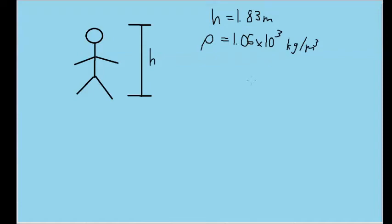This problem asks us to calculate the hydrostatic difference in blood pressure between the foot and the brain in a person 1.83 meters tall. We are given that the density of blood is 1.06 times 10 to the third power of kilograms per cubic meter.